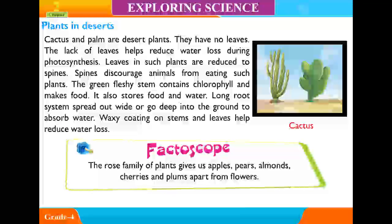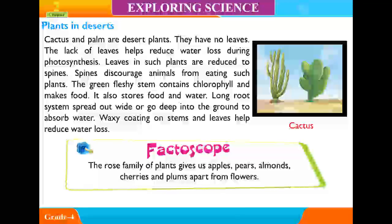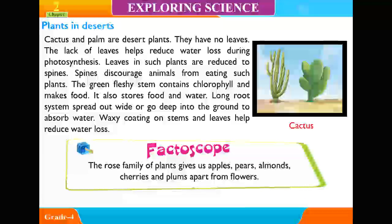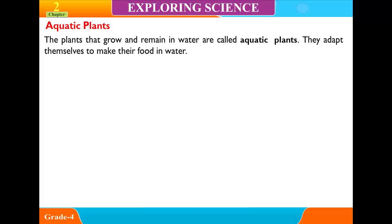Waxy coating on stems and leaves helps reduce water loss in desert plants like cactus. Aquatic Plants. The plants that grow and remain in water are called aquatic plants. They adapt themselves to make their food in water.